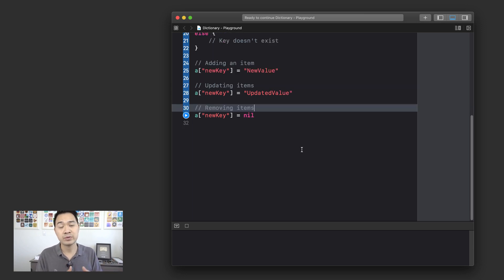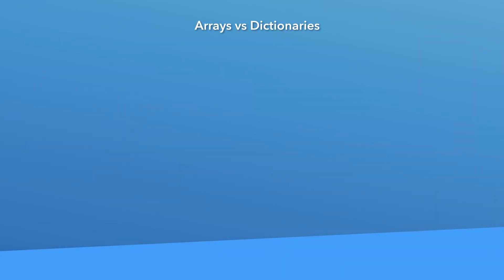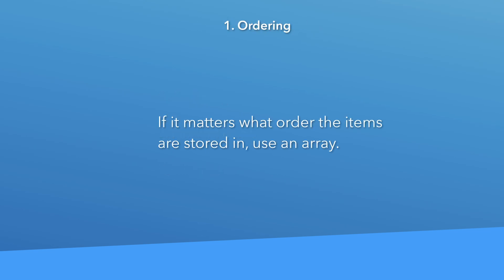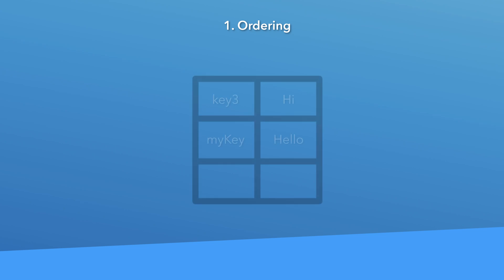Working with dictionaries is pretty straightforward, but they're so useful because as you start working with third-party APIs and services, most of the data returned to you will be in the format of dictionaries and arrays. I wanted to discuss the differences between arrays and dictionaries and when to use each. I'll use three criteria: ordering, finding items, and purpose. For ordering — if the ordering of your collection matters, you definitely want to use an array, because an array is arranged in a series of slots each with an index number. A dictionary has no concept of ordering.